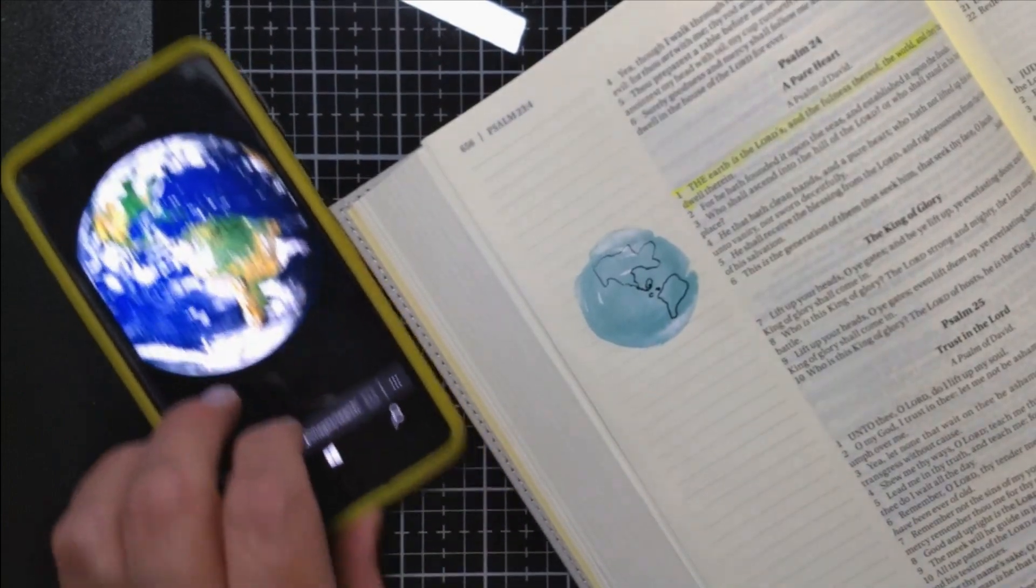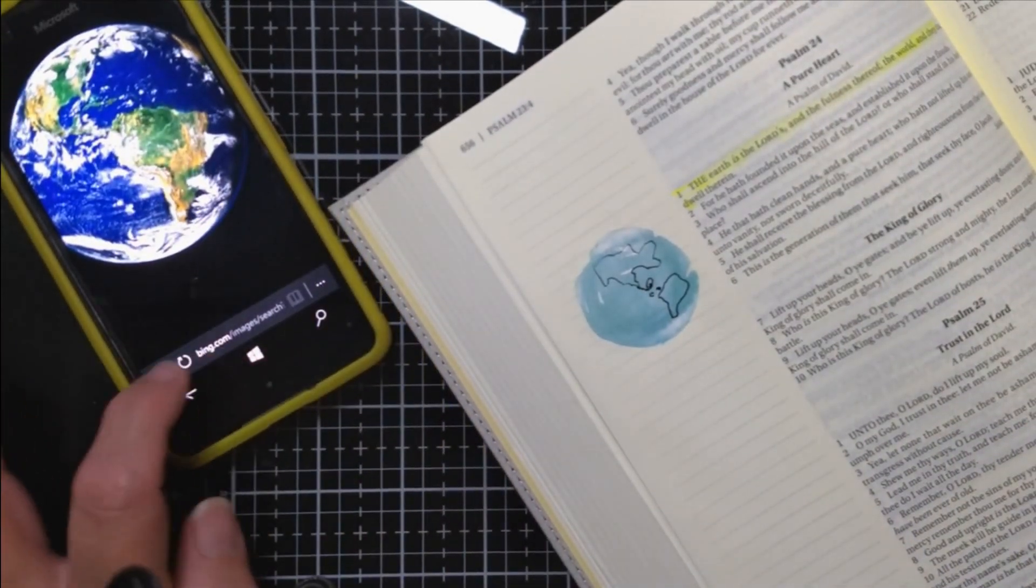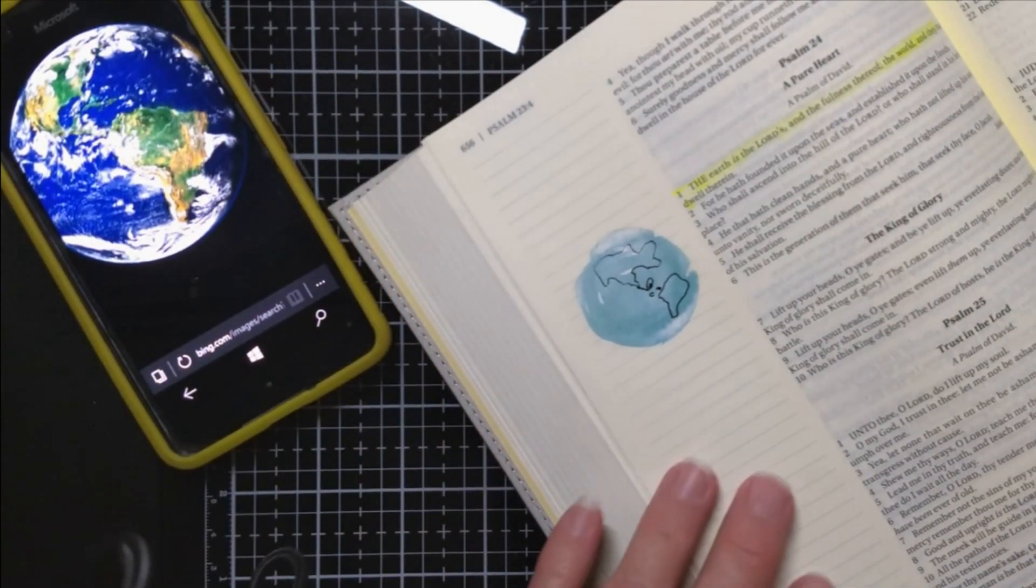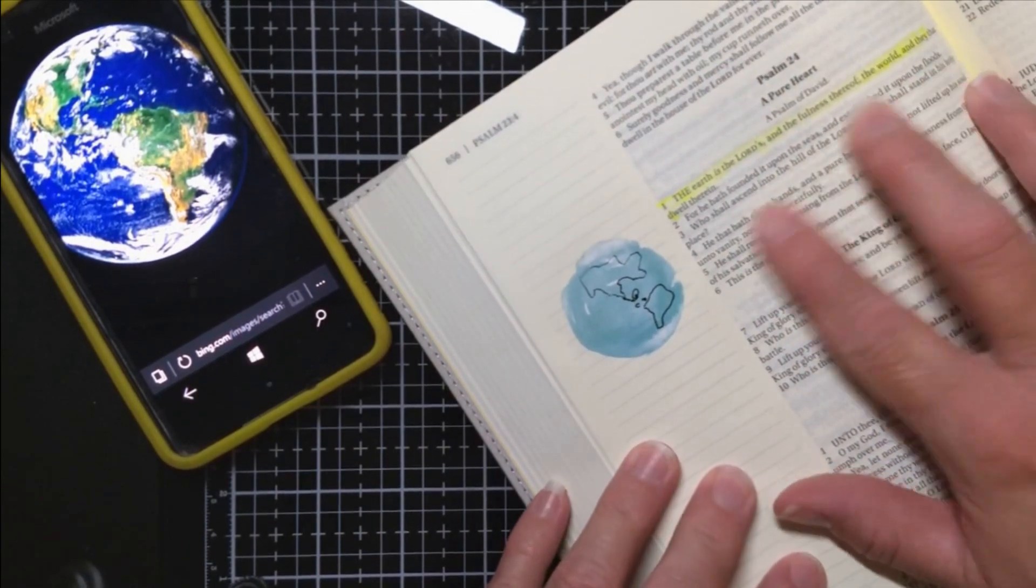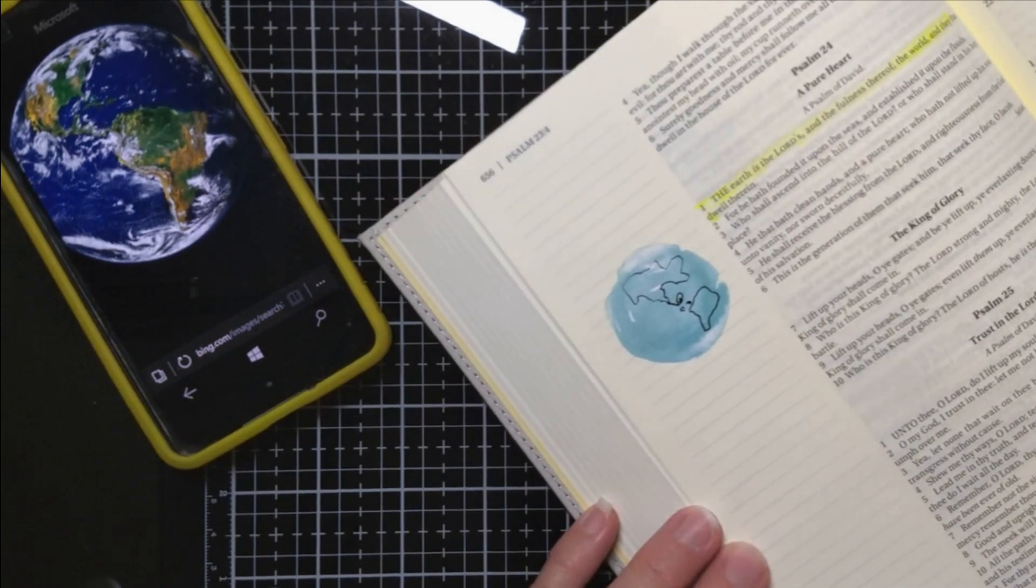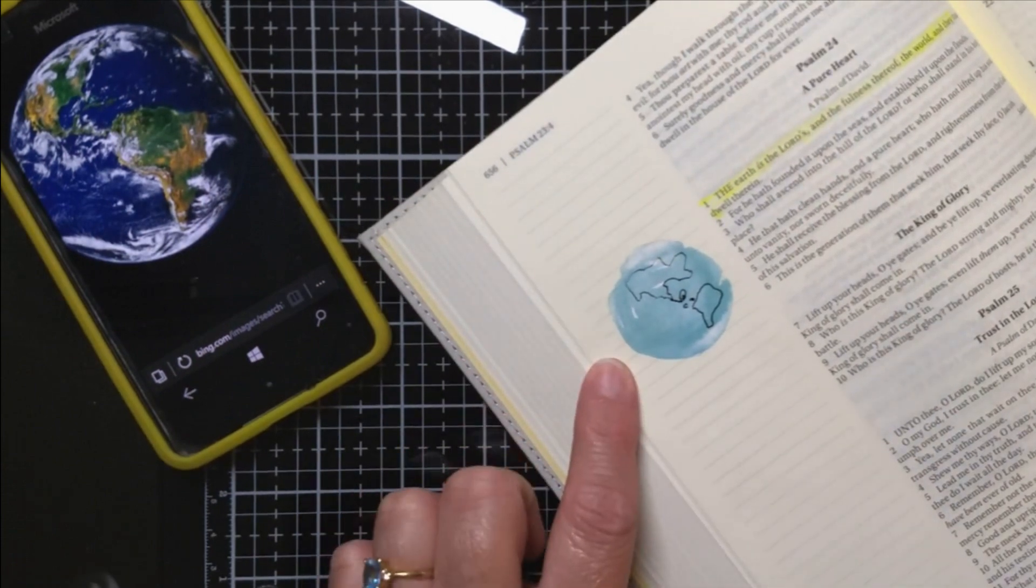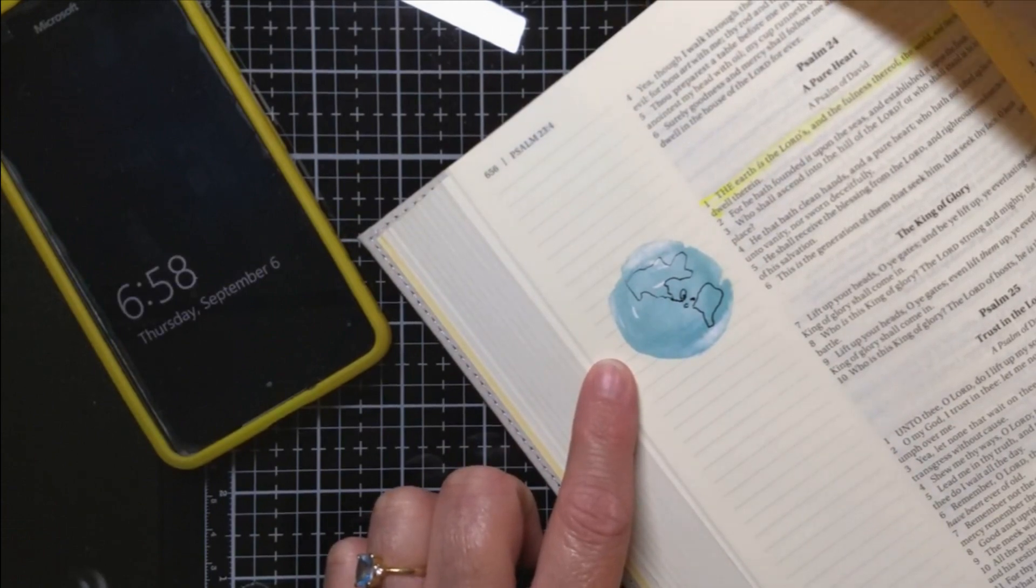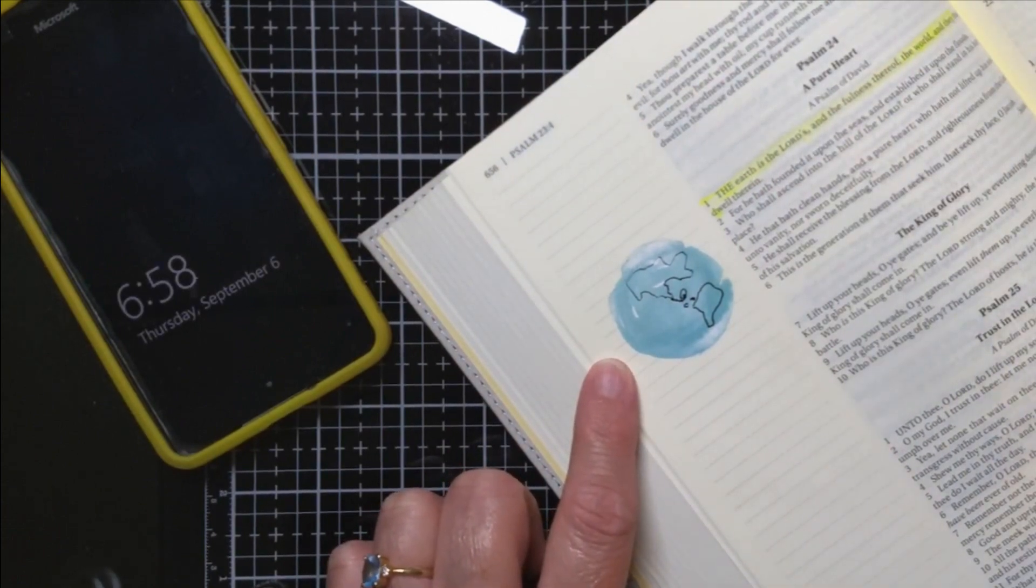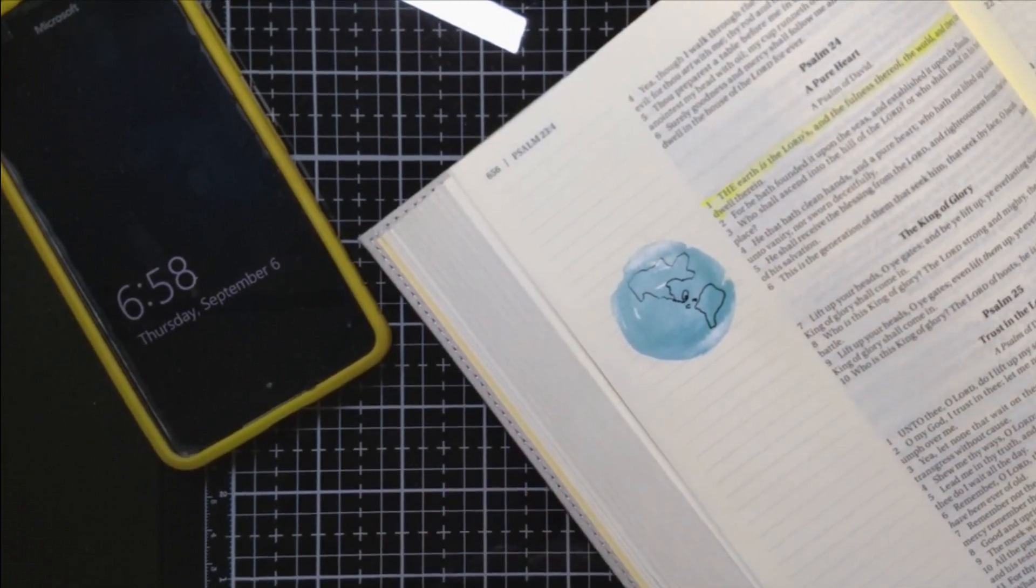That's good enough, that looks good, looks like earth. All right, so the earth is the Lord's and the fullness thereof, the world and they that dwell therein. So all of us here on earth belong to God. He is in charge and he's the one who loves us so much that he sent his only son to die so that we might live, and he's the one who makes the rules.